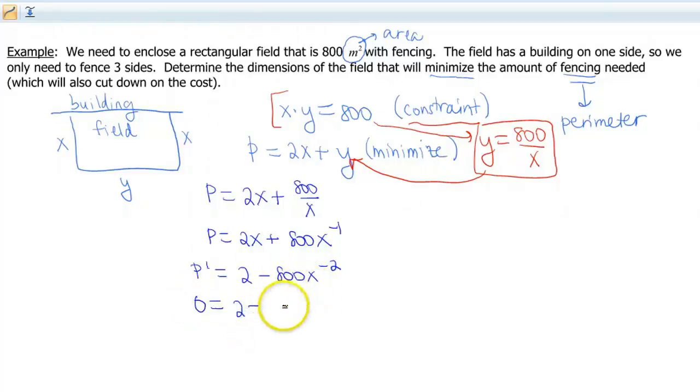I'm also gonna do a little bit of algebra here because 800x to the negative 2 is the same as 800 over x squared. And only because it's gonna be a lot easier to solve for x when it doesn't have a negative exponent on it. So instead I'm gonna rewrite it as a fraction.